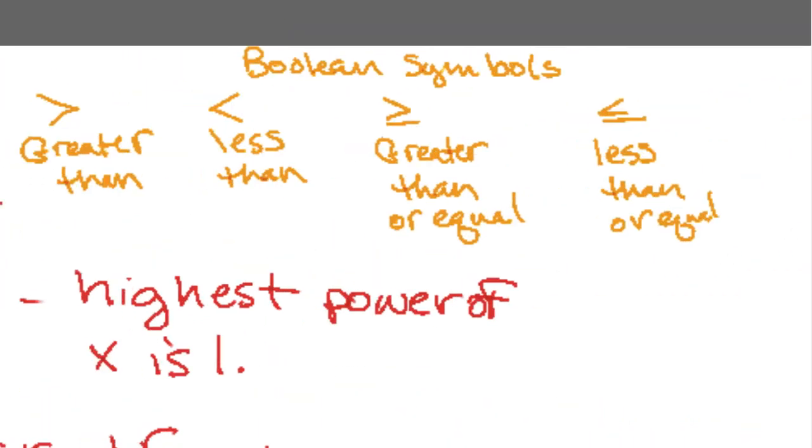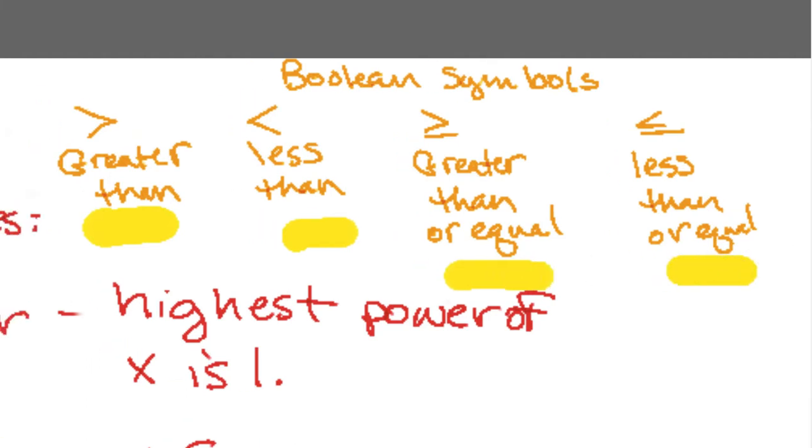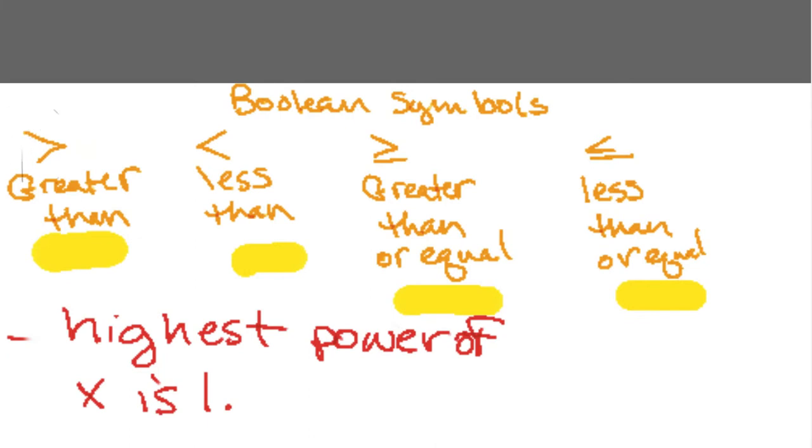Well they're based off these boolean symbols that indicate whether one value is greater than, less than, greater than or equal to, or less than or equal to another value. Usually the larger end of this thing points to the larger number or value and the smaller point points to the smaller end.